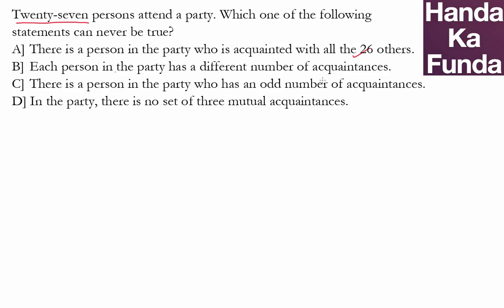There is a person in the party who has an odd number of acquaintances. That is also quite possible. It's possible that I am at the party and know only one person. In the party, there is no set of three mutual acquaintances. What three mutual acquaintances means is that I know a set of three people and you also know the same set of three people, which is also quite possible.